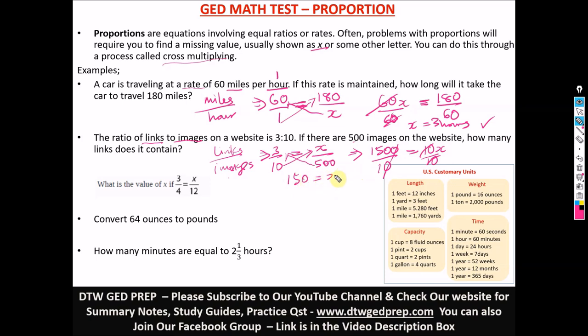So 500 times 3, that would give us 1500 equal to 10X. And to get X, we divide both sides by 10. This cancels. This one zero here cancels one zero here. So we have 150 equal to X. And what is X? Links. So we have 150 links. So for 500 images, we are going to have 150 links.